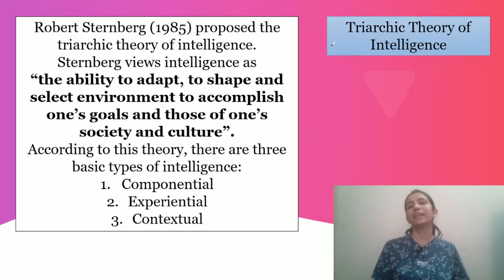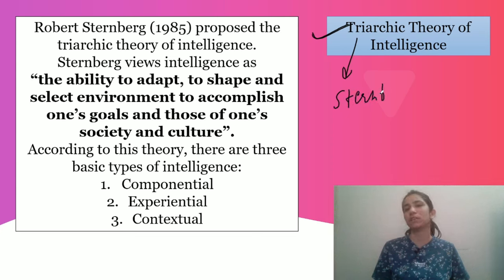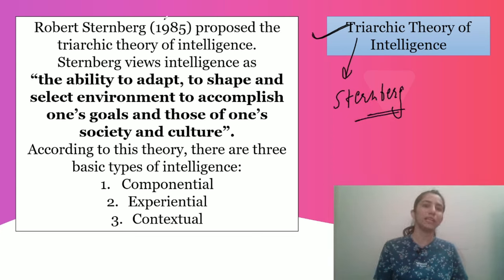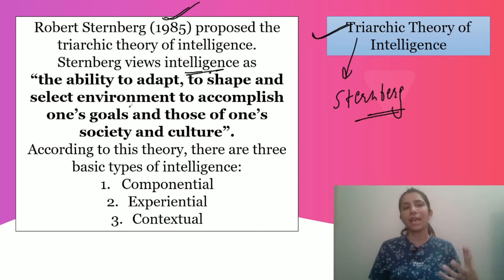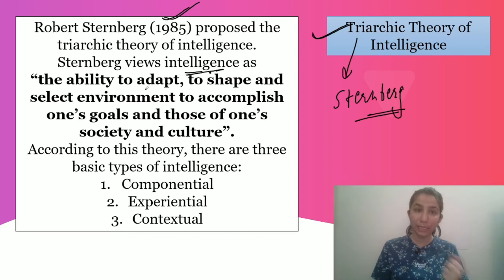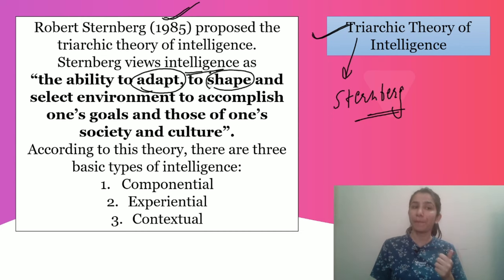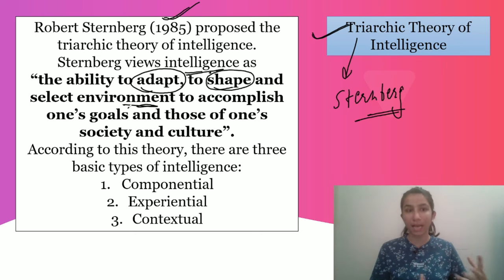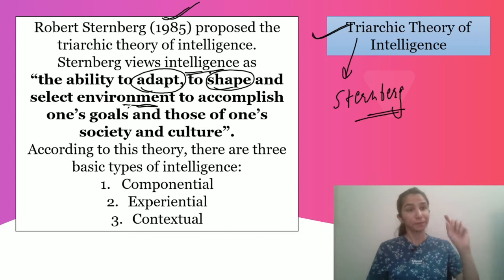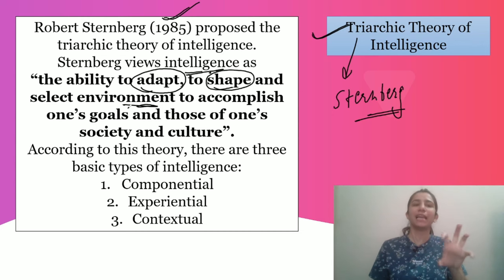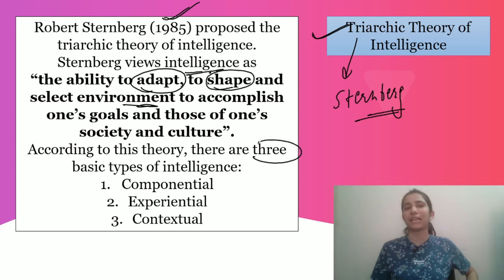So, Triarchic Theory — remember, wherever you have seen it, you know Sternberg. Robert Sternberg, in 1985, proposed his views on intelligence. Intelligence is the ability to adapt, shape, and select the environment so that your goals — or any society's or any culture's goals — you can achieve those goals. So adapt, shape, or select the ability — that is what we are talking about when we talk about intelligence. There are three basic types of intelligence.